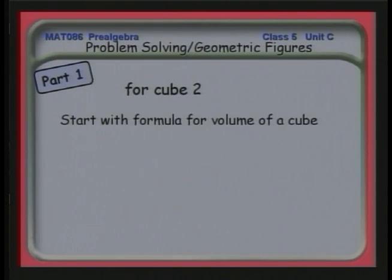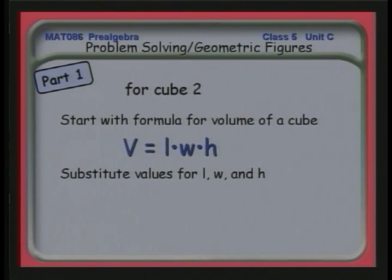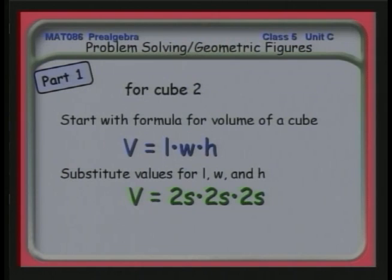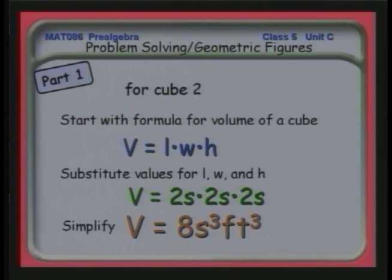For cube 2, we start with the formula for the volume of a cube: volume is length times width times height. We substitute values — each side of the large cube is 2s — so our volume is 2s times 2s times 2s, which is (2s)³. Working this out, 2 times 2 times 2 is 8, and we compact the variables, so the volume of the larger cube is 8s³ cubic feet.